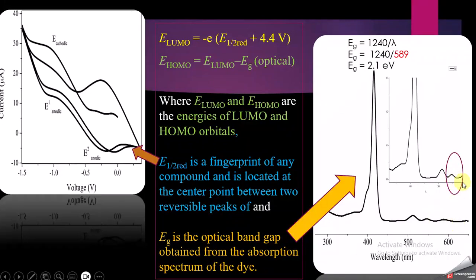I will find the band edge and draw a line from this peak to here, and from this point I will take the wavelength that this line touches and convert this wavelength into the band gap.